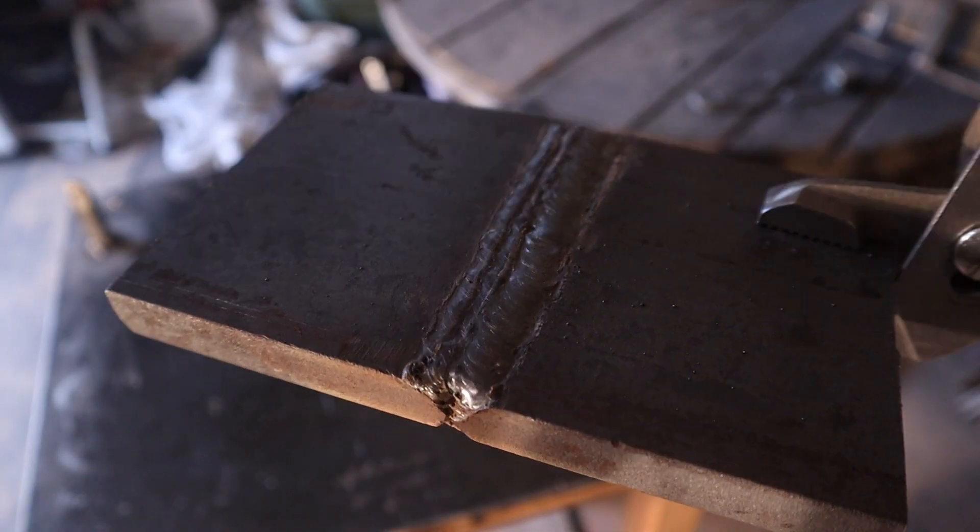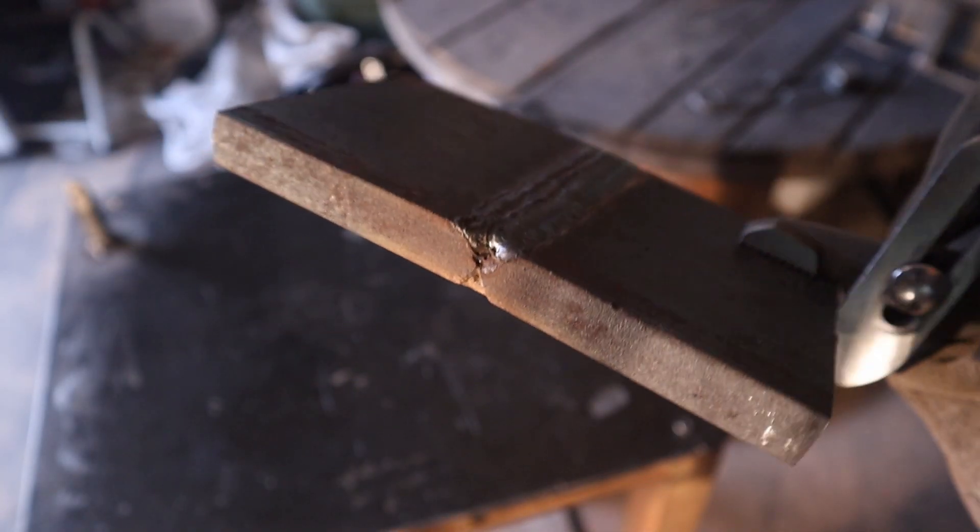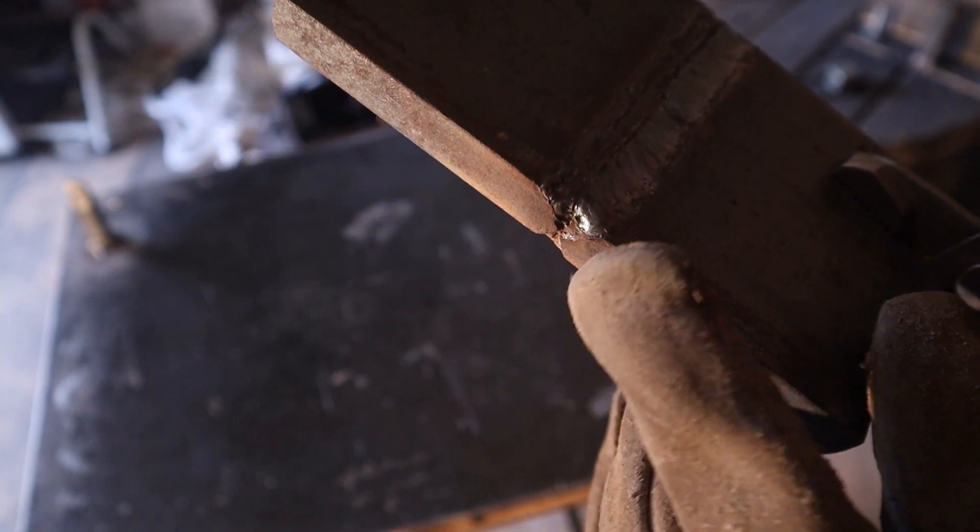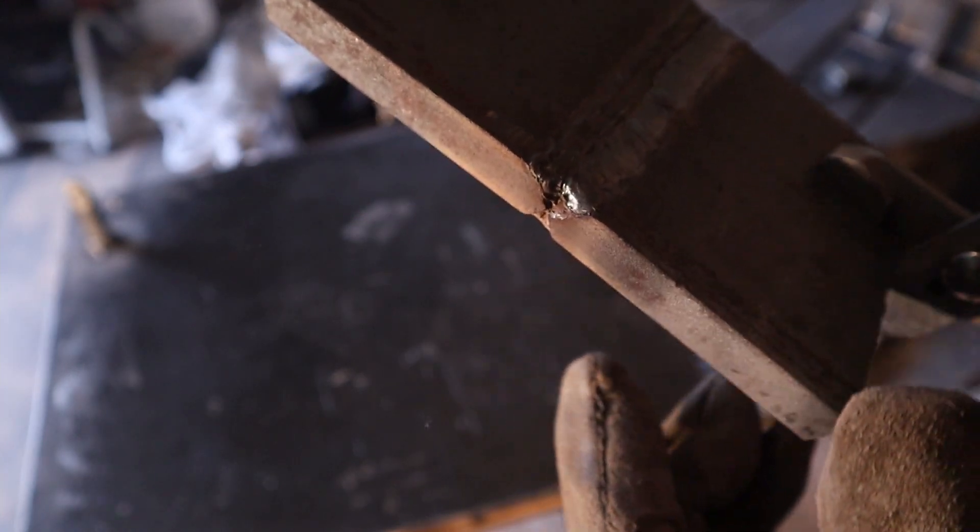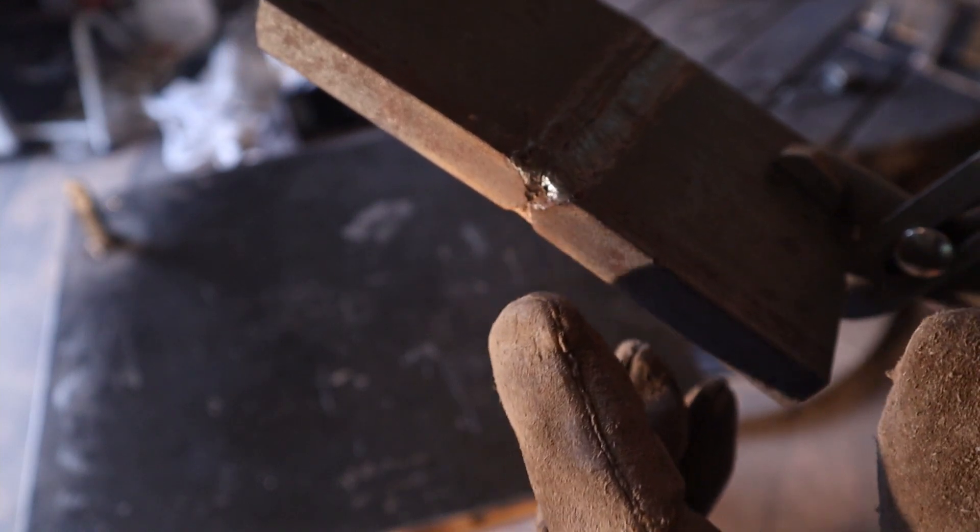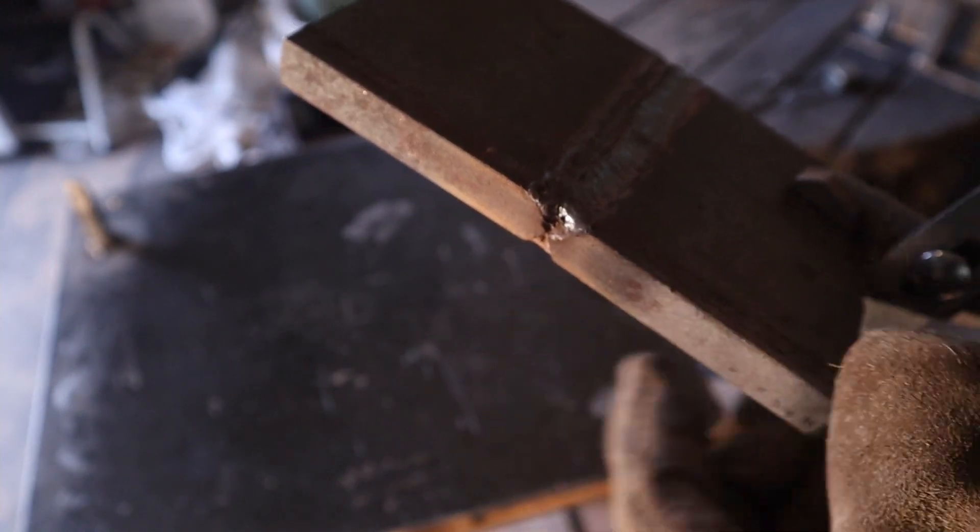And now that I have that weld finished, the steel is completely welded together, minus the ends. And if you needed to get those completely full, you could just take a grinder, grind out a little U into that, and then put some weld in that.